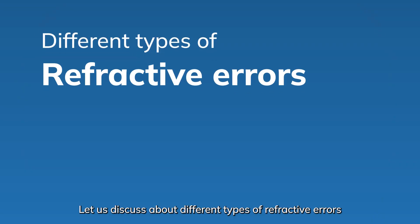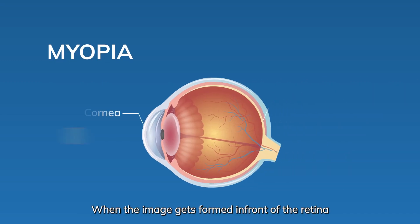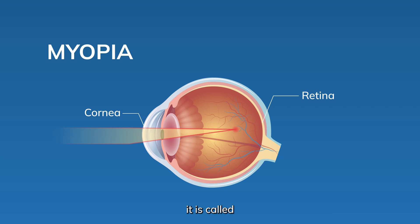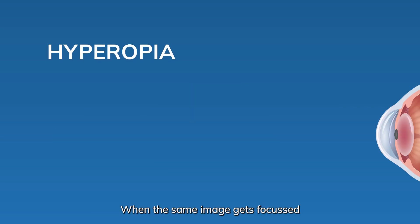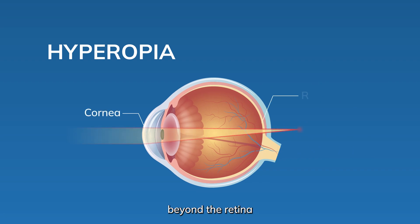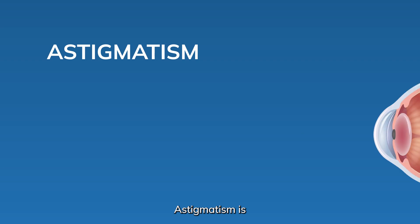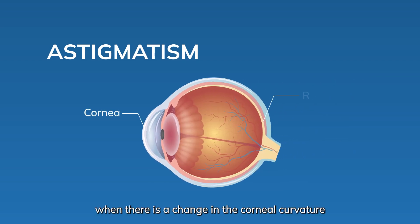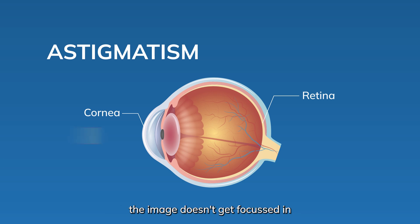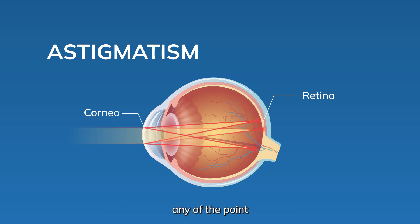Let us discuss about different types of refractive errors. When the image gets formed in front of the retina, it is called nearsightedness or myopia. When the same image gets focused beyond the retina, it is called hyperopia, where they need plus power. Astigmatism is when there is a change in the corneal curvature between horizontal and vertical cornea, and the image doesn't get focused at any point.